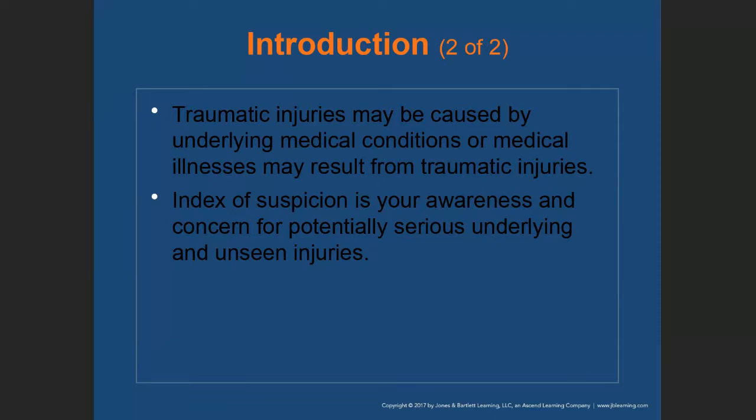The mechanism of injury is what caused the injury to the patient. The index of suspicion is what you are anticipating based on the injury — what is the worst-case scenario that could occur for this patient based on the mechanism of injury. That's the index of suspicion.